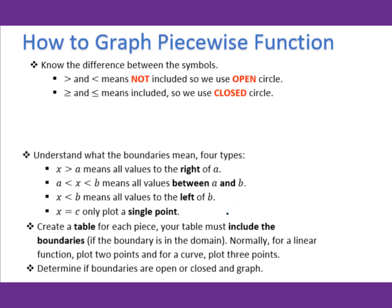Now let's talk about how to graph piecewise functions. First of all, know the difference between the symbols. When you have greater than or less than, it means not included, so we use the open circle. When you have greater than or equal to, or less than or equal to, it means included, so we use the closed circle.